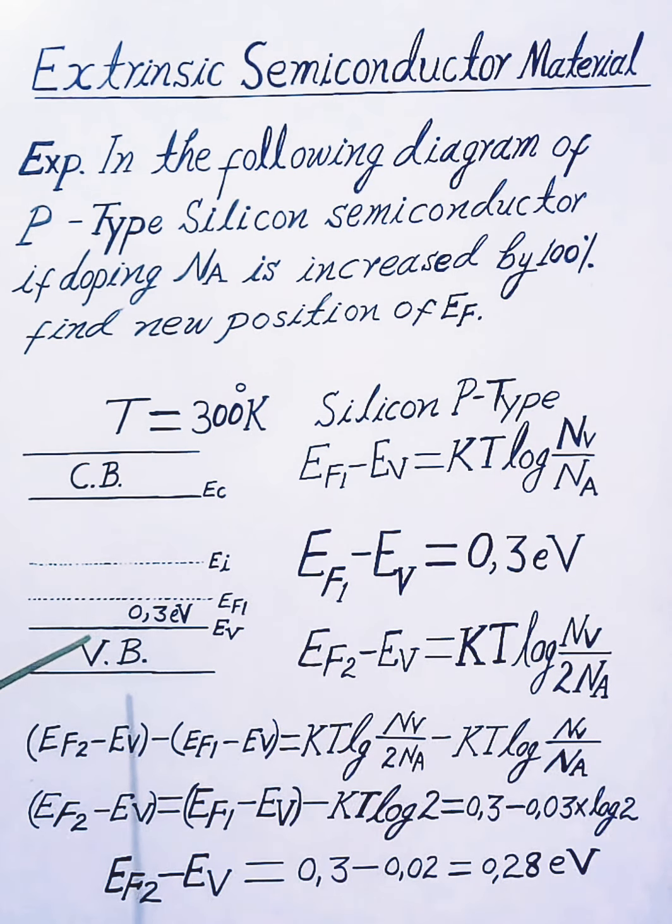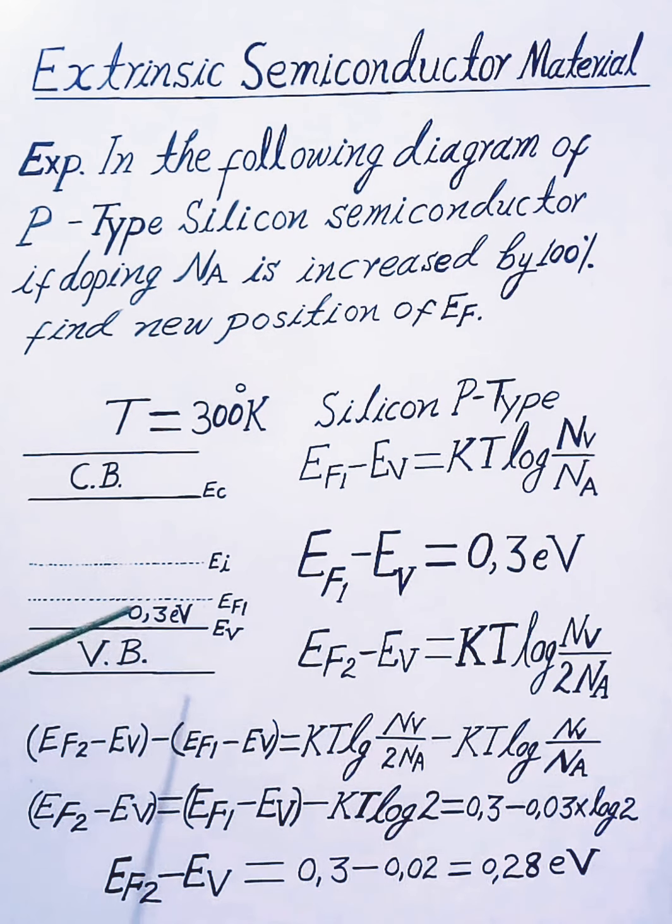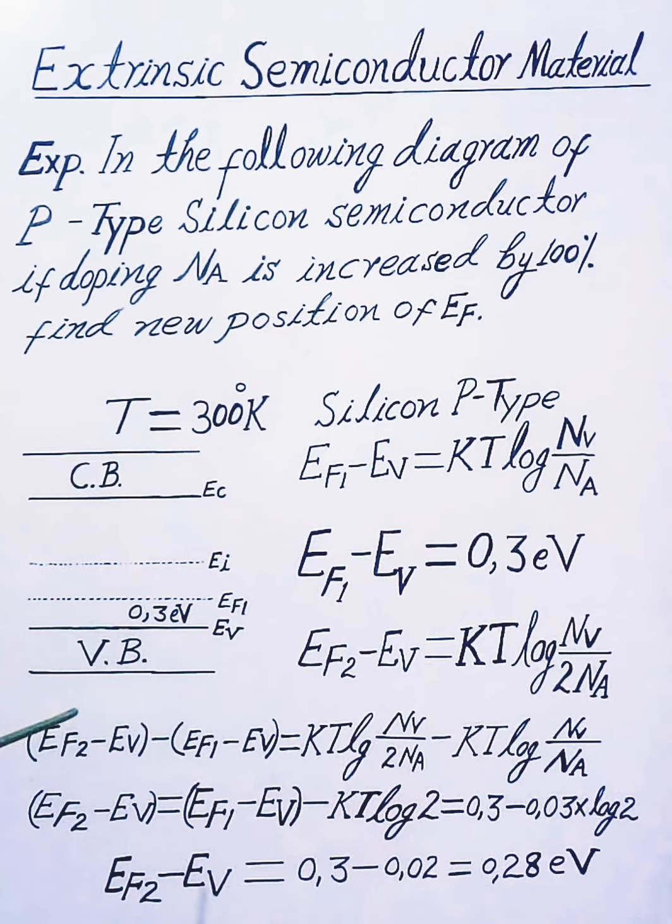In the diagram you can see, for P-type silicon semiconductor material, the Fermi level EF1 is 0.3 electron volts above the valence band.